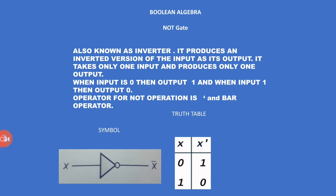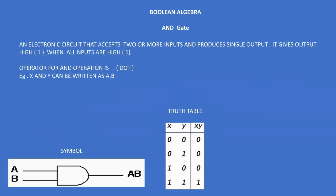And when input is one, then output is zero. The operator for NOT operation is dash and bar. Please look at the symbol — a bubble is placed over there. Input is X and the output is X-bar. In the truth table, X is the input column and X-dash is the output column, which is basically NOT X.